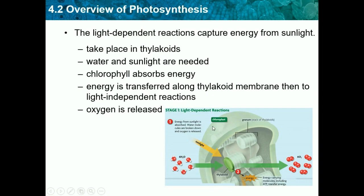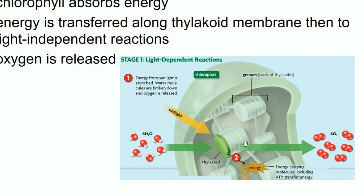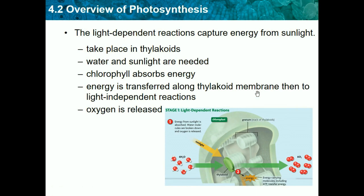Looking at a diagram of light-dependent reactions: these take place in the thylakoids. Energy from sunlight is absorbed, water molecules are broken down, and oxygen is released as a waste product into the environment — that's how plants give us oxygen. It also produces energy-carrying molecules including ATP, which transfer energy. The ATP created here is transferred to the next stage. The whole point of this first light-dependent reaction is essentially just to make ATP to send off to the next cycle.